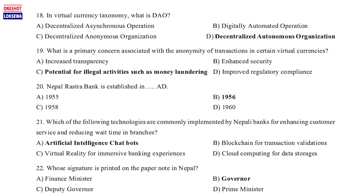Question 19: What is a primary concern associated with the anonymity of transactions in certain virtual currencies? a. Increased transparency, b. Enhanced security, c. Potential for illegal activities such as money laundering, d. Improved regulatory compliance. Question 20: Nepal Rastra Bank was established in: a. 1955, b. 1956, c. 1958, d. 1960.